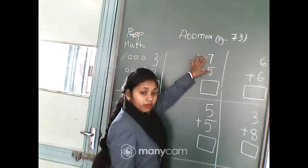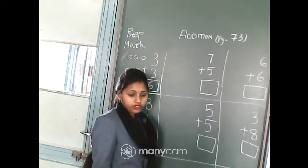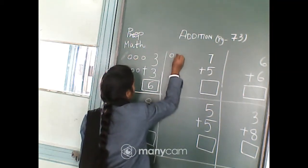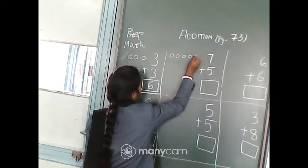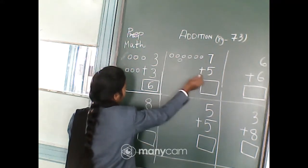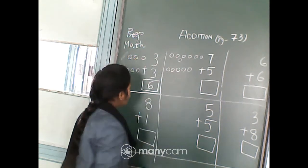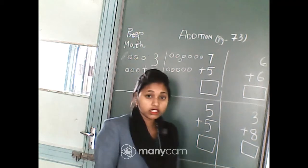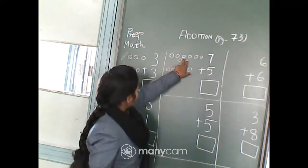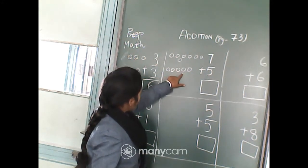Now tell me what will be the answer. 7 plus 5. So first we will draw 7 circles: 1, 2, 3, 4, 5, 6, 7. Now we will count all together — 7 plus 5: 1, 2, 3, 4, 5, 6, 7, 8, 9, 10, 11, 12.